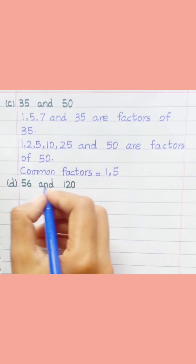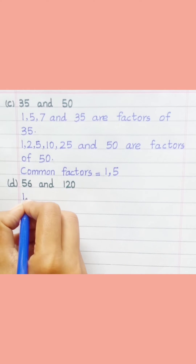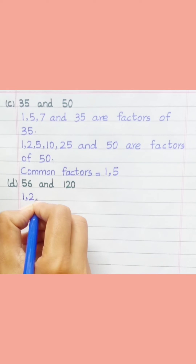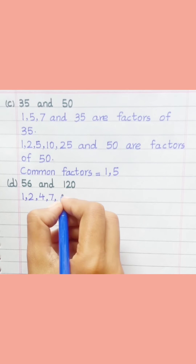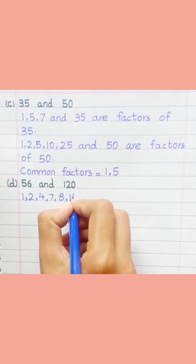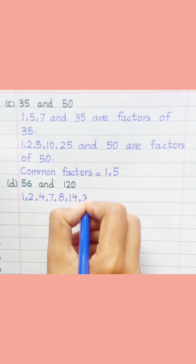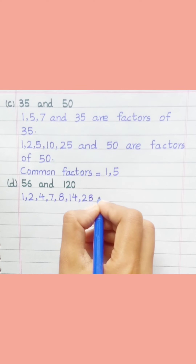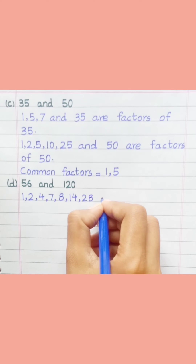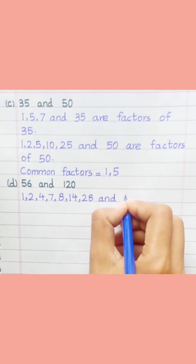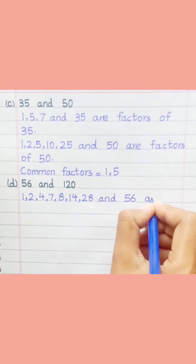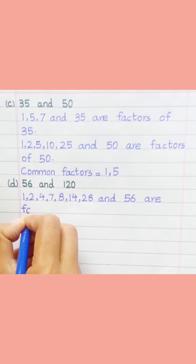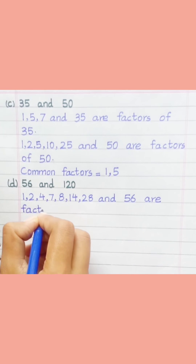Part D: 56 and 120. 1, 2, 4, 7, 8, 14, 28, and 56 are factors of 56.